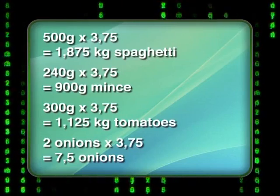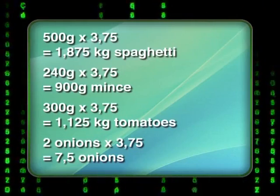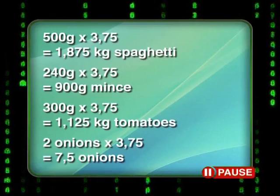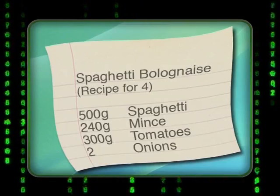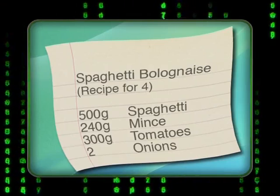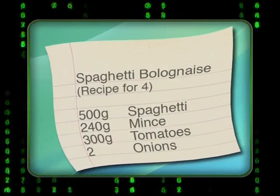Can you see the problem with the original recipe? The problem is that all the ingredients except onions were given as masses. You can work out exact ratios of quantities using masses. If you had a mass of onions, you could chop them up and weigh them too. Watch and see how a professional chef solves this problem.